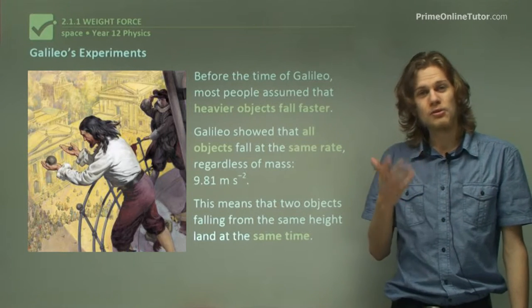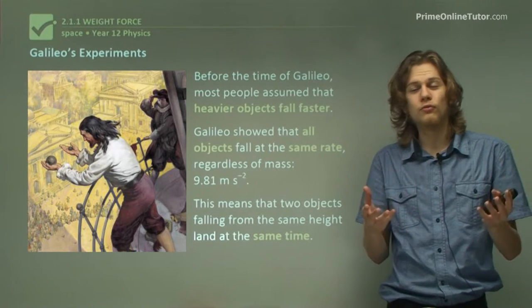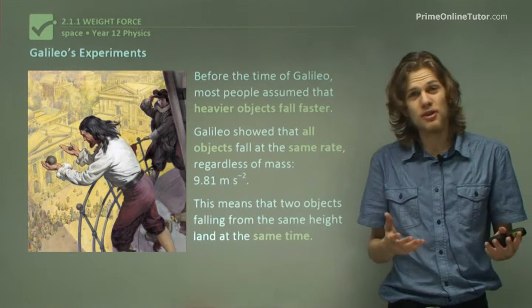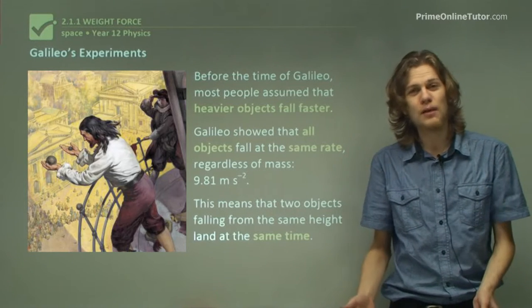Galileo supposedly demonstrated this by dropping two objects of different masses off the leaning tower of Pisa and then noticed that they landed at the same time.